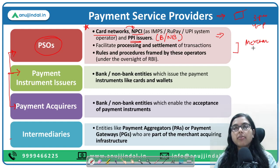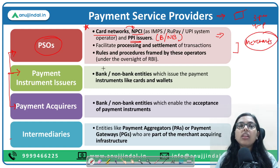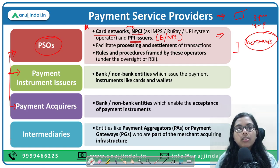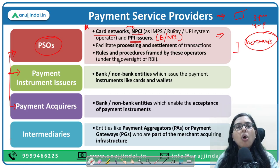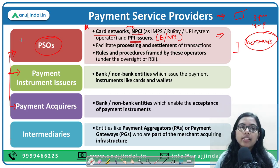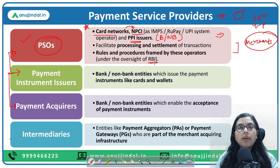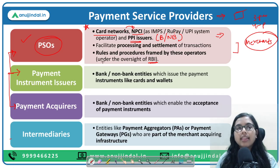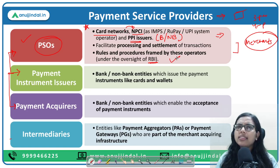All rules and procedures regarding payment charges are framed by the PSOs, keeping RBI in consideration. RBI oversees these decisions and gives its approval, confirming everything is in order. PPI issuers can be banks or non-bank entities — if a bank issues it, the bank is the issuer; if a non-bank issues it, that non-bank entity is the issuer.